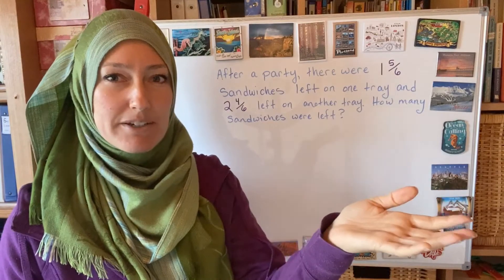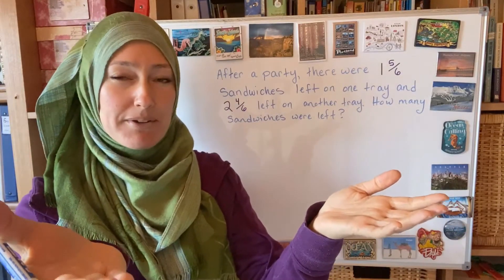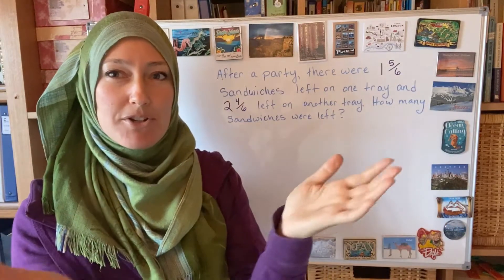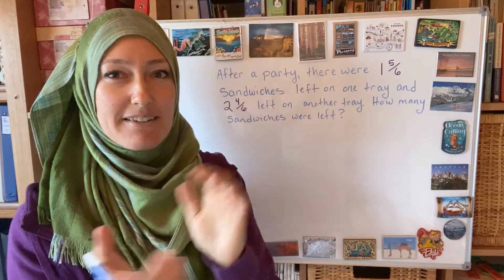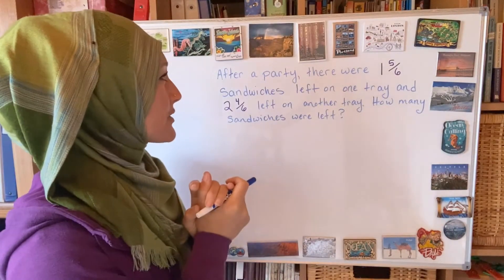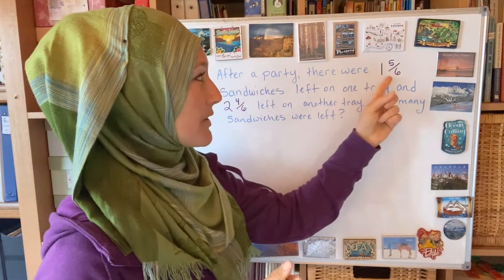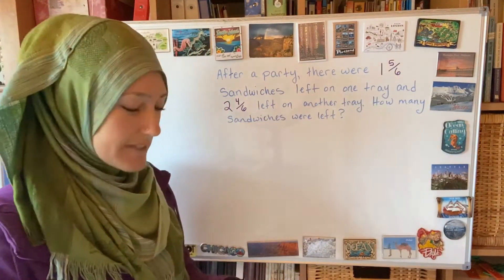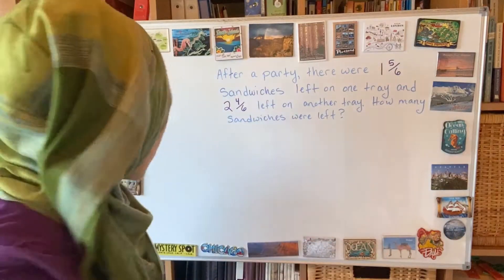After a party, there were some sandwiches left on one tray and some sandwiches left on another tray. We want to know how many sandwiches were left altogether. There's a leftover amount here and a leftover amount here, and I want to know how much all together — so I'm going to be adding these fractions. There's 1 and 5 sixths here, and 2 and 4 sixths here.